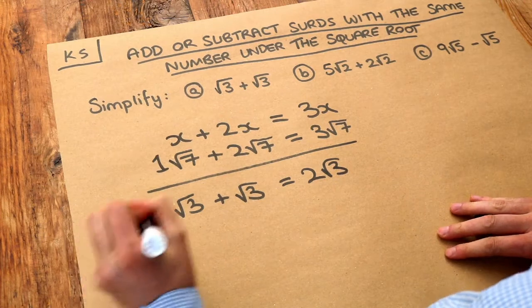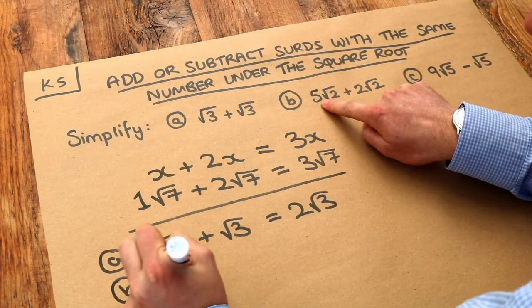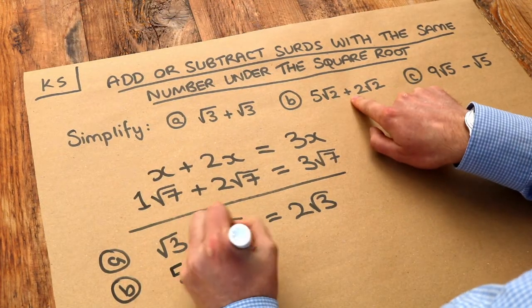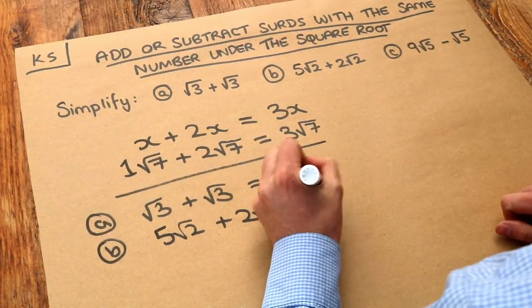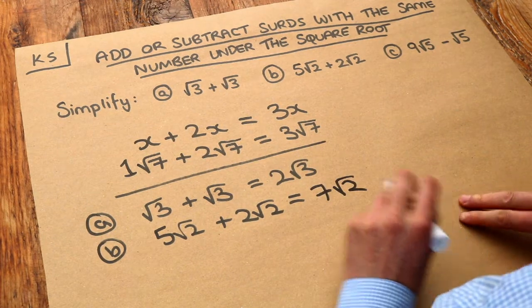What about the second one? If we have five lots of root 2 and we add two lots of root 2, how many lots of root 2 do we have? Well, we have seven lots of root 2, and that's the final answer.